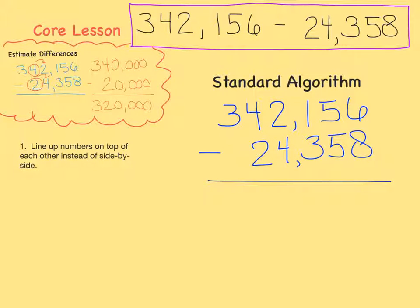Next, we make sure that the places are lined up correctly. What do I mean by this? The ones are with the ones, the tens are with the tens, and so on throughout the whole number so that we know that each place lines up with the one above or below it.